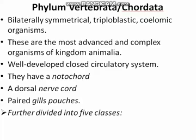Now let's talk about phylum Vertebrata in detail. We are already done with invertebrates, which includes all the other phyla of kingdom Animalia studied in our previous lectures. The organisms of phylum Vertebrata are bilaterally symmetrical, triploblastic, and coelomic. These are the most advanced and most complex organisms of kingdom Animalia.